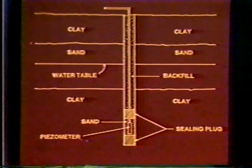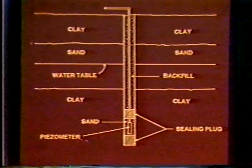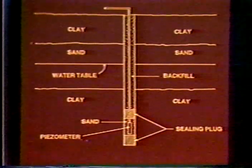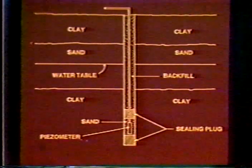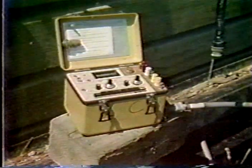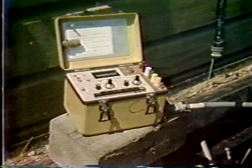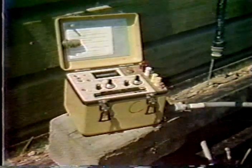Piezometers are instruments used because water is so important — we often need to know where water is located in a moving mass and what the water pressure is. We install these in a well casing by drilling down with a drill rig, sealing the bottom, installing the piezometer, backfilling with sand, and sealing the top. We have tubes and electrical cables, and instrumentation that can read the water pressure. This gives us the location and the pressure of the water in the landslide.